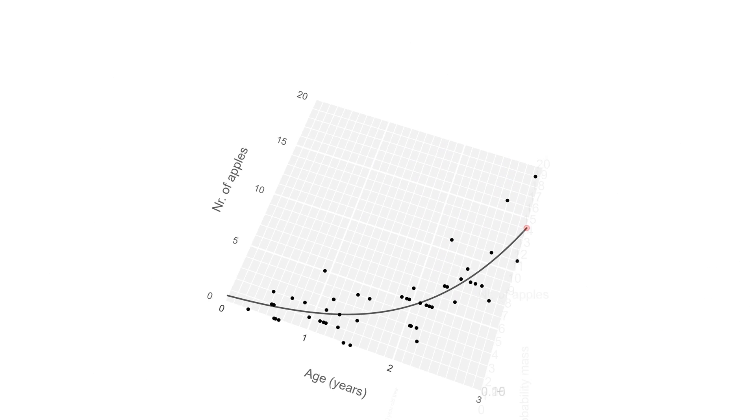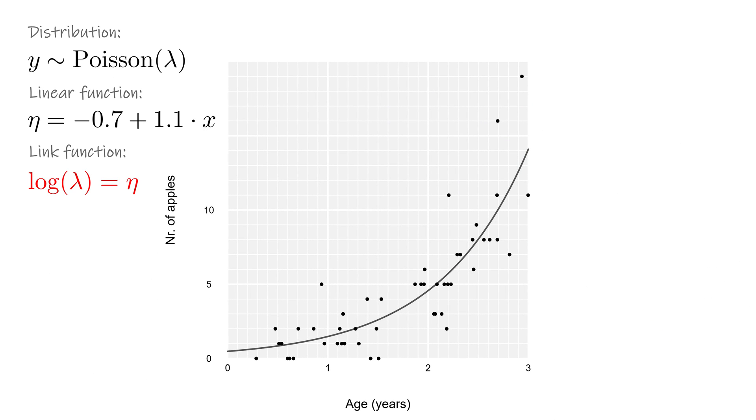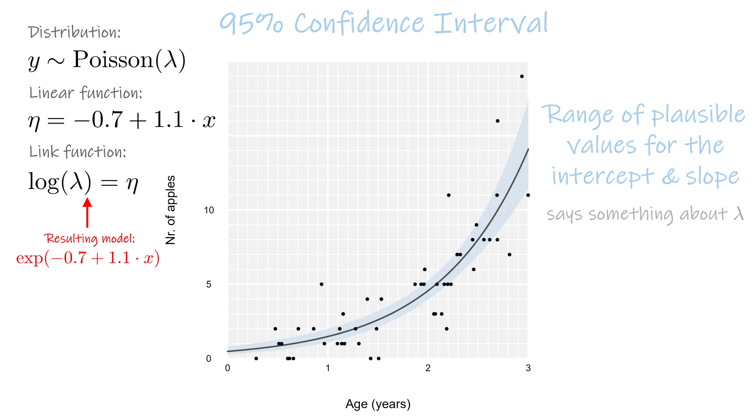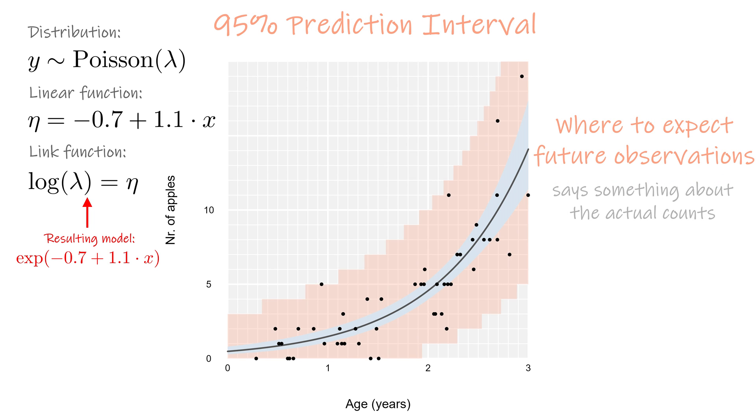The canonical link function of the Poisson distribution is the logarithm of the rate lambda, which is equivalent to taking the exponent of our linear predictor. That is why regression with a Poisson GLM predicts an exponential relationship, at least if we use the canonical link and no further non-linear terms. If this proves to be a reasonable approximation, then we can express the uncertainty of these estimates with a confidence interval and we can predict new observations with a prediction interval.